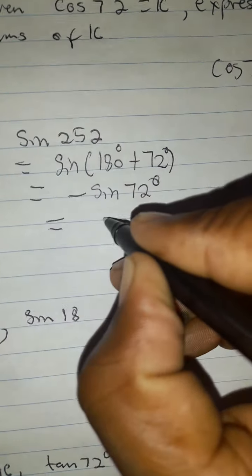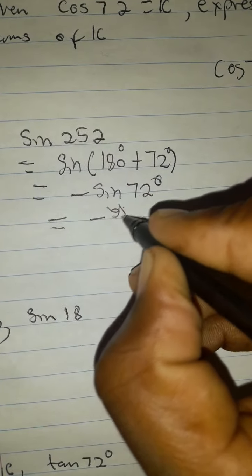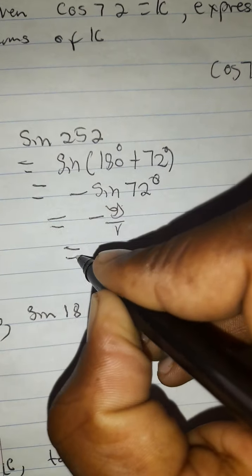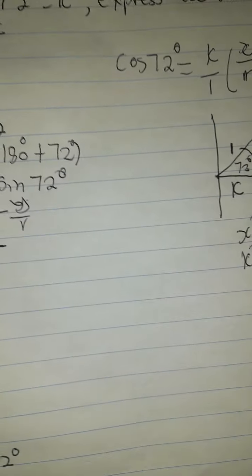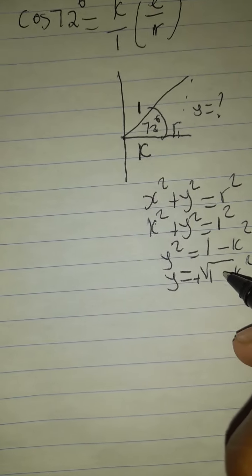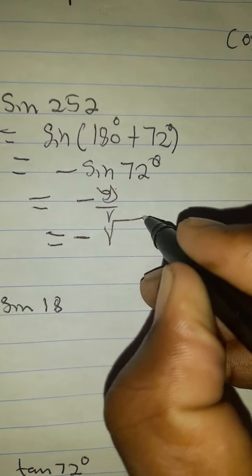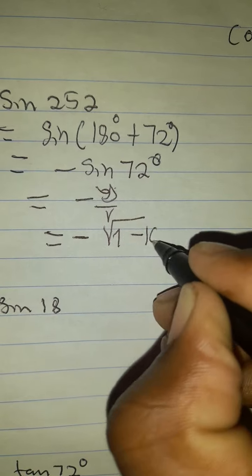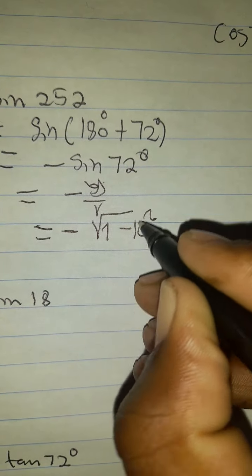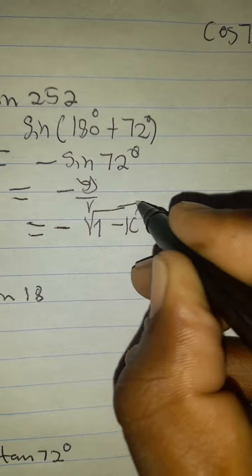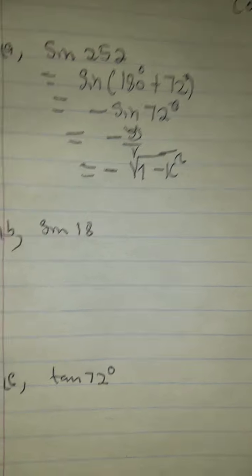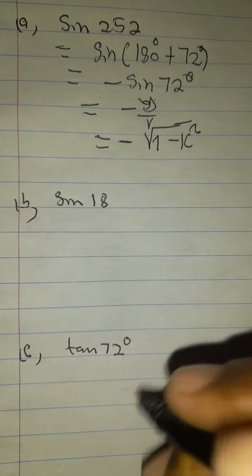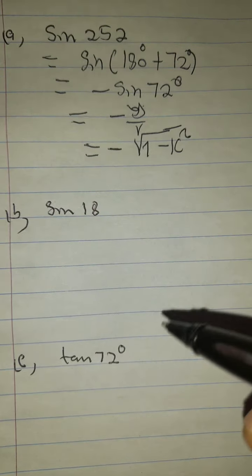In terms of ratios, we are going to have negative y over r. Our y was root 1 minus K squared. Because our r is 1, when we divide this by 1, we're still going to get the same thing. So we are left with negative root 1 minus K squared.